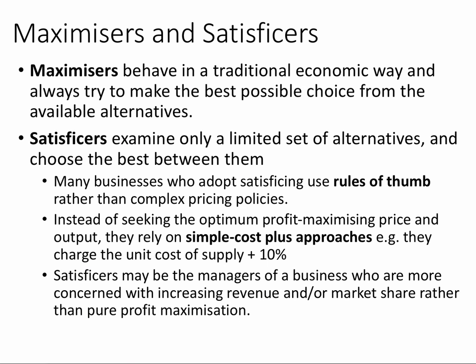One of the key things in objectives is to think about the behaviour of firms in the real world. Whilst textbooks might assume firms are maximisers seeking a profit-maximising price and output, the reality is that most firms are satisficers. Satisficing comes from 'satisfactory' and 'sufficient' — businesses are hoping to make enough profit to satisfy shareholders, sufficient profit to generate an end-of-season bonus, rather than trying to optimise the whole time. They simply rely on simple cost-plus approaches, working out the cost and adding a margin. Satisficing managers are often more concerned with prioritising revenue rather than maximising profits.